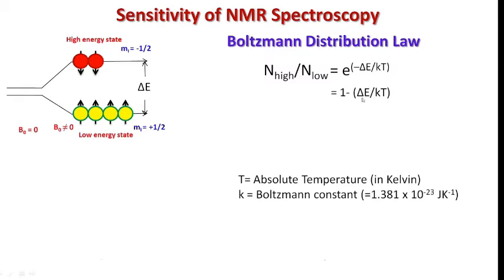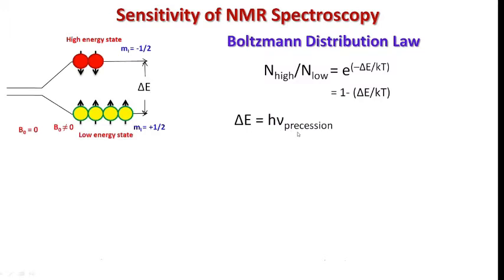To increase this term, the other way is to increase the ΔE. Here in this case, ΔE is equal to hν(precession). This can be written as γhB₀. Here ℏ is h upon 2π where h is the Planck's constant. Since this term is constant, therefore we can vary either gyromagnetic ratio or B₀.